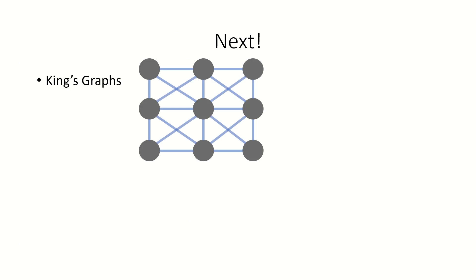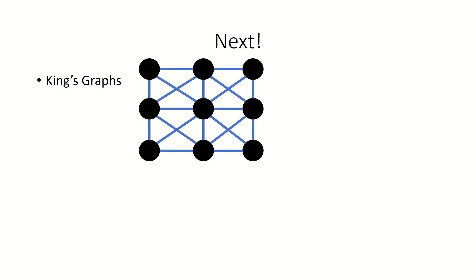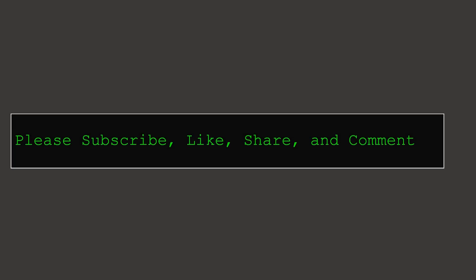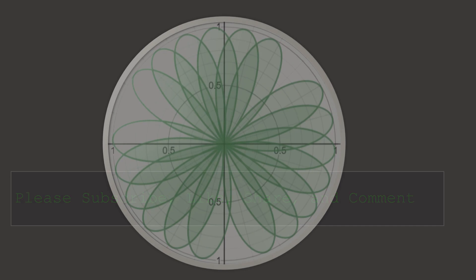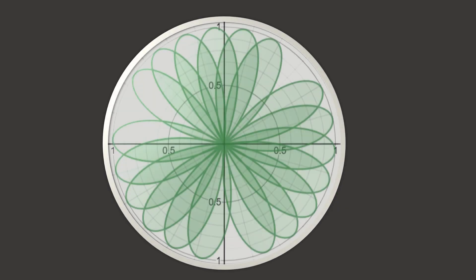In my next video, we're going to take a look at King's graphs — a type of graph that captures the legal moves of a king on a chessboard and is defined using a strong product. I encourage you to draw out some graphs of your own and find their strong products for practice. Thanks for watching. Please subscribe, like, share, and comment. Have a great day.